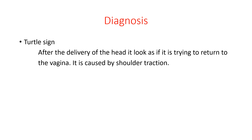To diagnose shoulder dystocia: in normal cases, after delivery of the head the shoulder comes out without delay. Here, there will be a delay in delivery of the shoulder after the head. The second sign is the turtle sign — just as a turtle withdraws its head, the baby's head appears to retract back toward the vagina due to traction from the impacted shoulder. If the turtle sign is present, shoulder dystocia should be suspected.